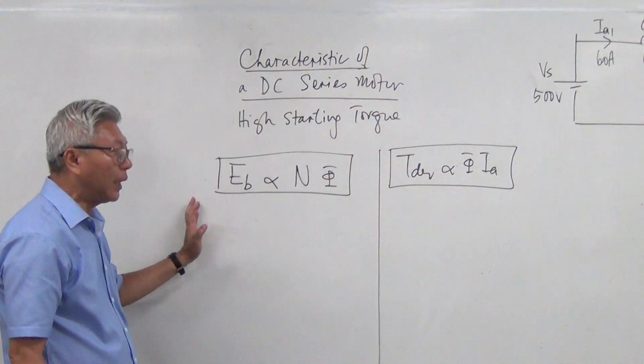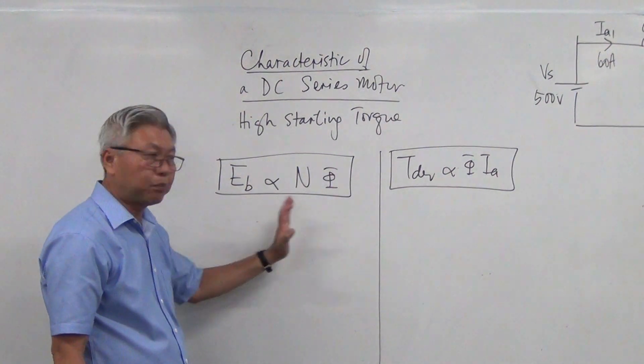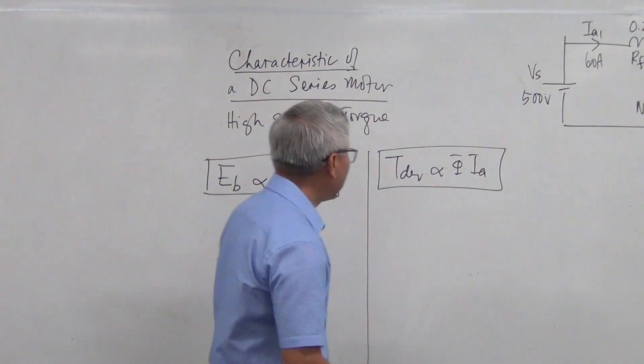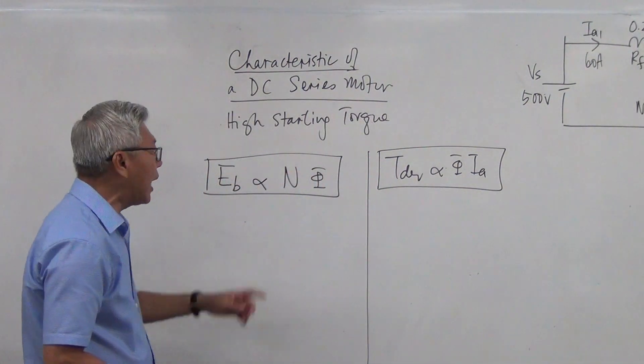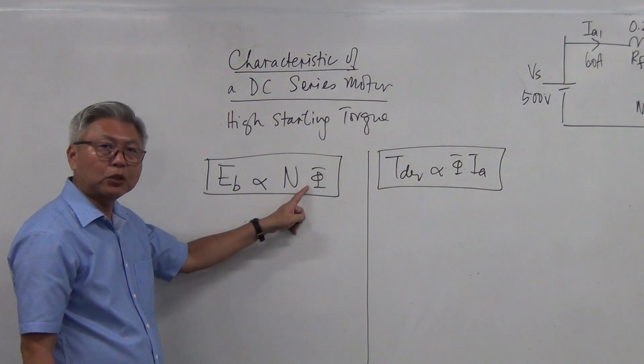Again, the same principle for our mathematical analysis is still the same. Back EMF EB is proportional to N flux, torque is proportional to flux IA. Now, the only thing here, we ask ourselves, in series motor which current is responsible to produce the flux?